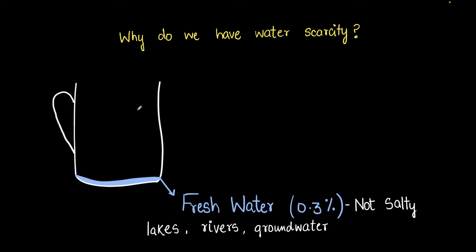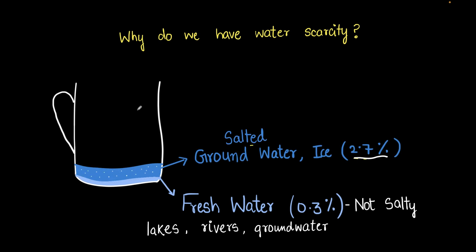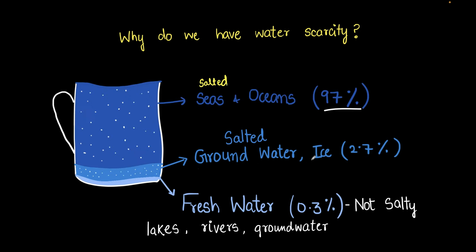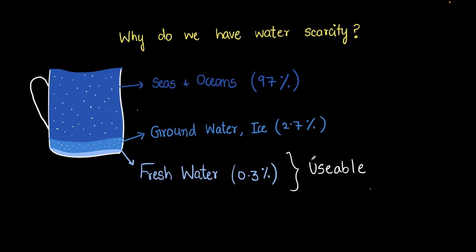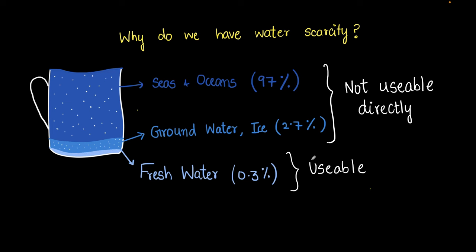Where is all the other water? 2.7 percent of Earth's water is salted groundwater and ice, which is not usable. The remaining 97 percent is in seas and oceans, which is also salty. So we have very little usable water, and that answers why we have water scarcity.